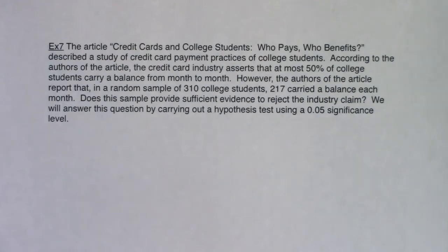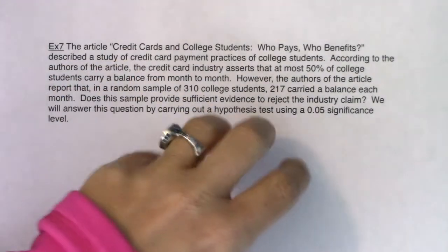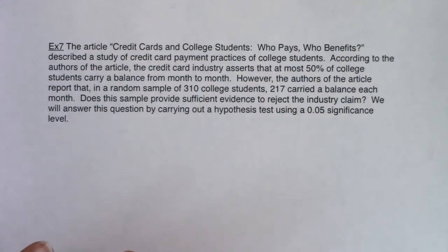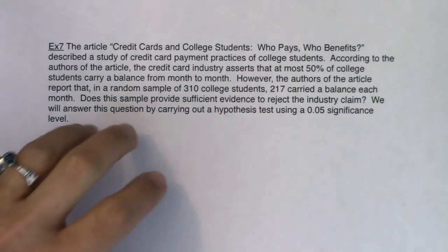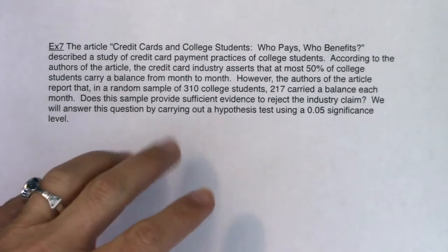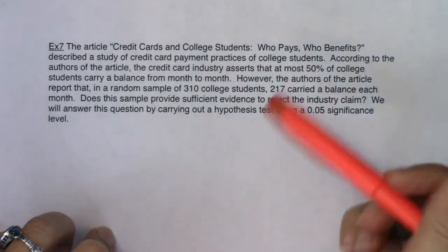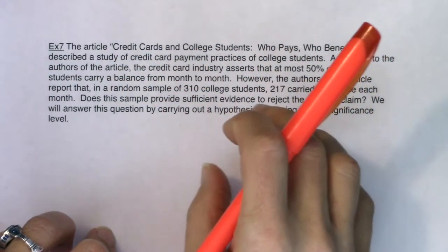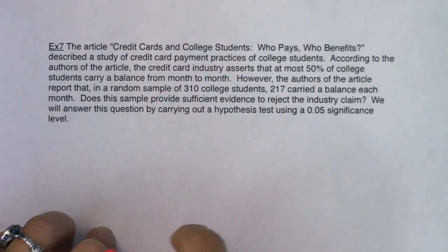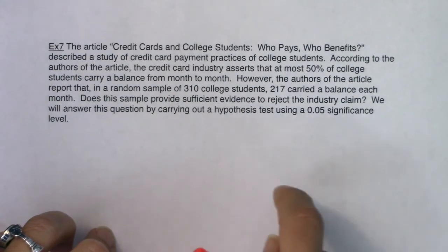Let's actually go through one of these. As you read this problem, the first thing to hone in on is: am I in mean land or proportion land? That's always the first set of questions. Then: how many samples do I have? In chapter nine, it'll always be one sample. The extra component for one-sample hypothesis testing is identifying two proportions — which one is the statistic and which one is the parameter.